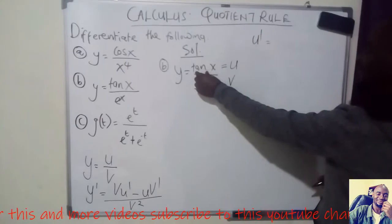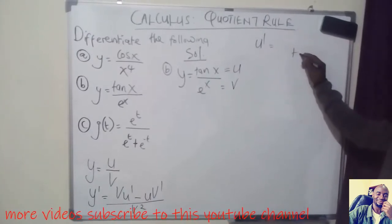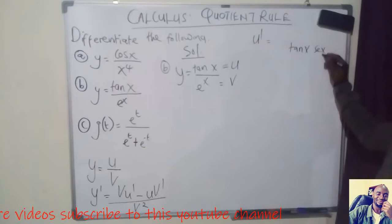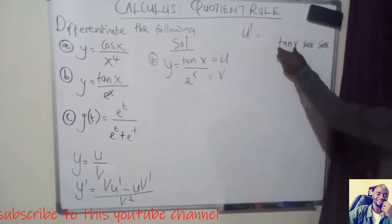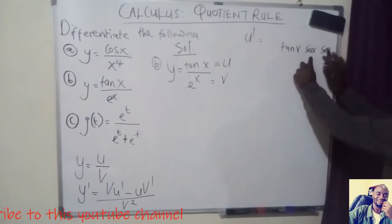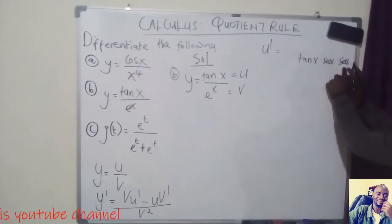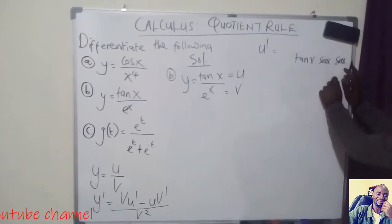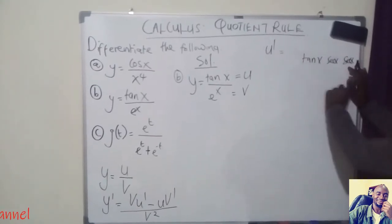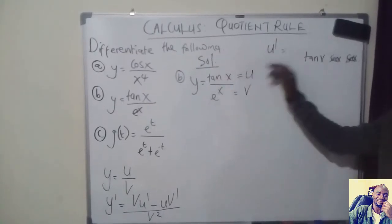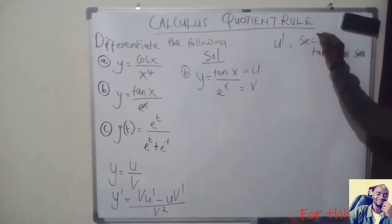When you are differentiating tan, the easiest way to remember is: write tan, x, sec, x, and sec, x. If you are differentiating tan, you delete tan and multiply the remaining two — giving sec x times sec x, which is sec squared x. If you are differentiating sec, you delete sec to get sec x · tan x. So the derivative of tan x will be sec squared x.